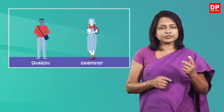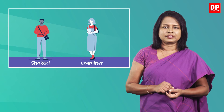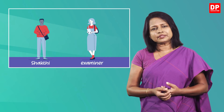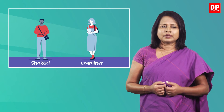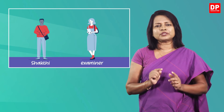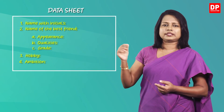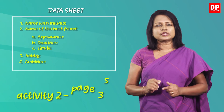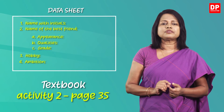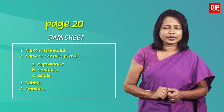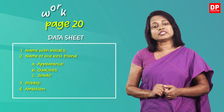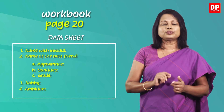In this interview, Shakti, who is a boy of your age, is interviewed. The purpose of this interview is to test his English language proficiency. You have to listen to the dialogue between the examiner and Shakti and fill in the data sheet. This is activity 2 on page 35 of your textbook, and this data sheet appears on page 20 of your workbook. Let's go through it together.